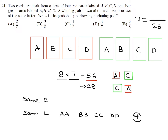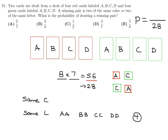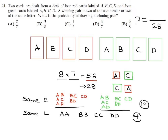Now for same color: you can have two red cards — A-B, A-C, A-D, B-C, B-D, or C-D — that's six combinations. In a very similar way, two green cards: A-B, A-C, A-D, B-C, B-D, and C-D — another six. So same color gives us twelve total winners.